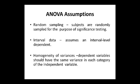Assumptions of ANOVA: First is random sampling — subjects are randomly sampled, making this a parametric test. Second is interval data — the dependent variable should be interval or ratio scale, while the independent variable should be non-metric or nominal scale. Third is homogeneity of variances — the dependent variable should have the same variance in each category of the independent variable.